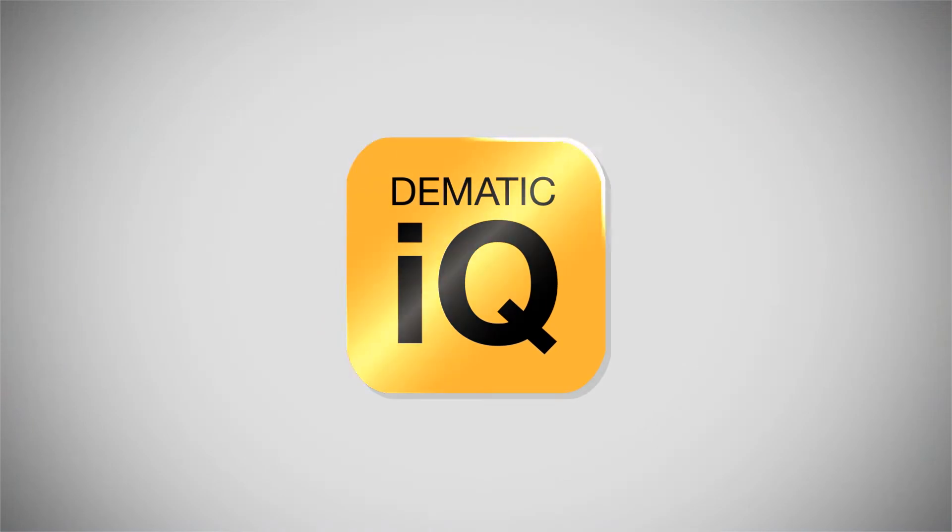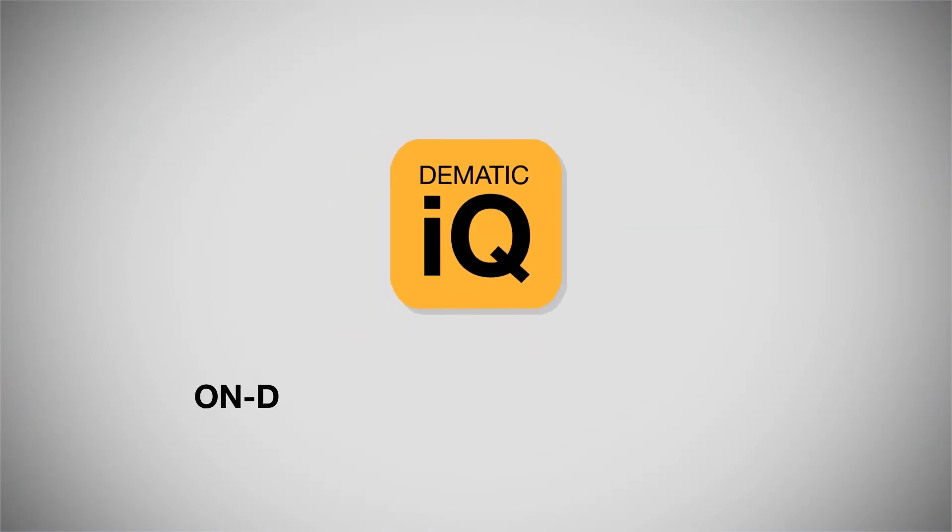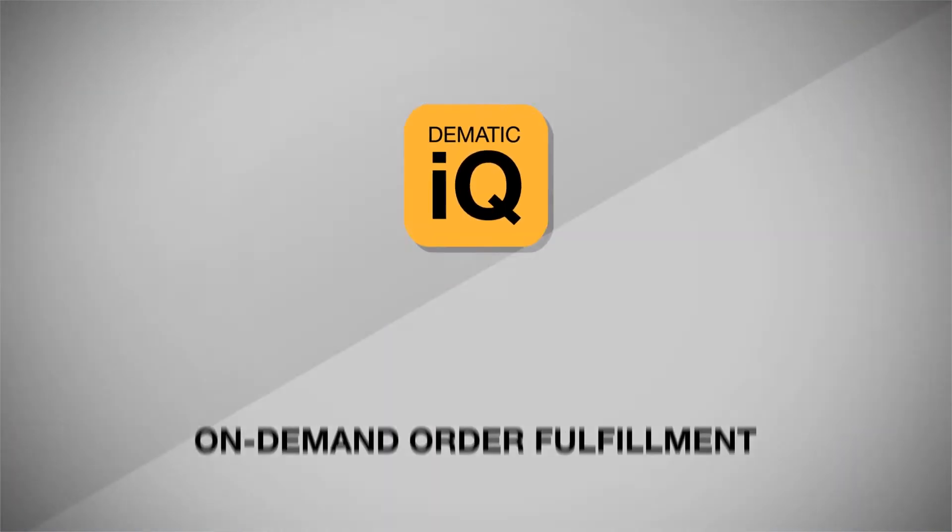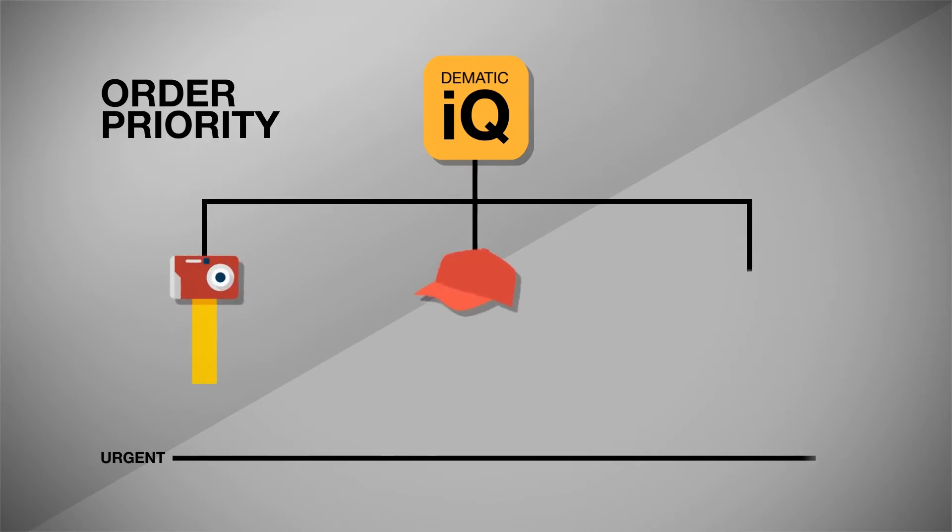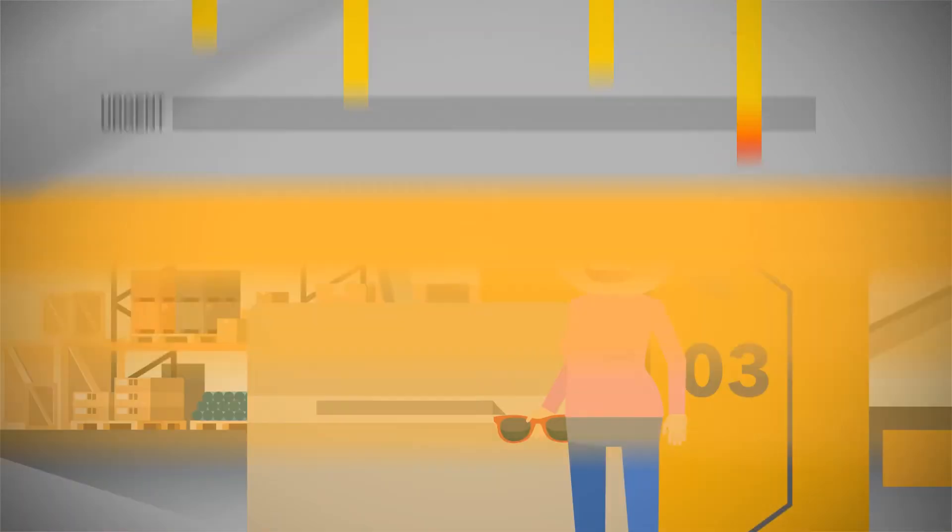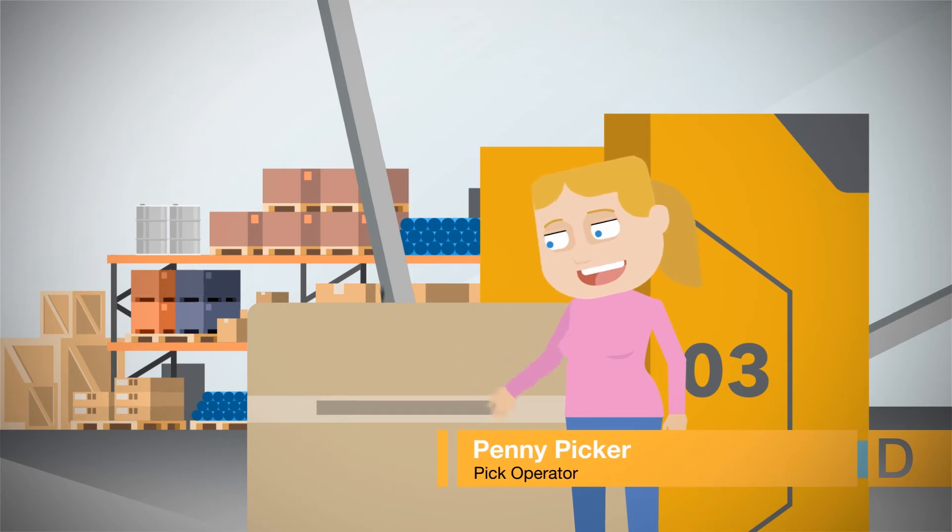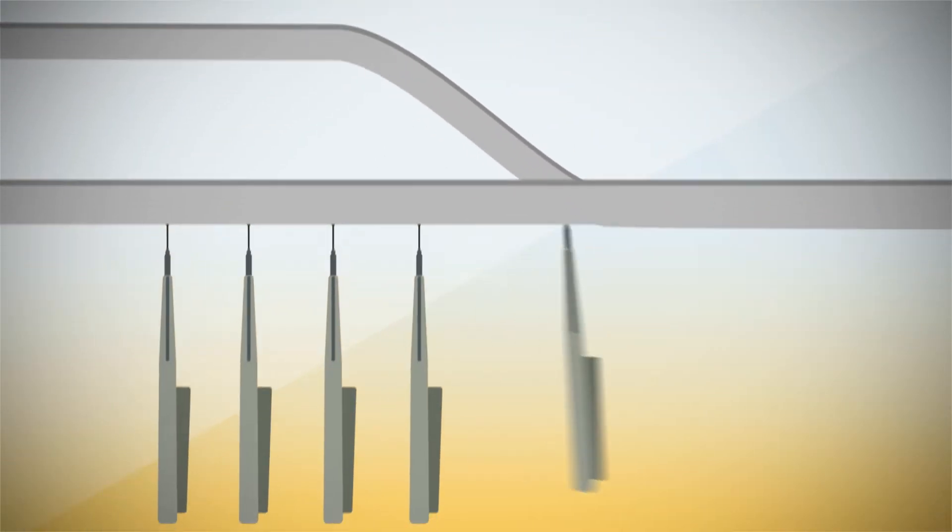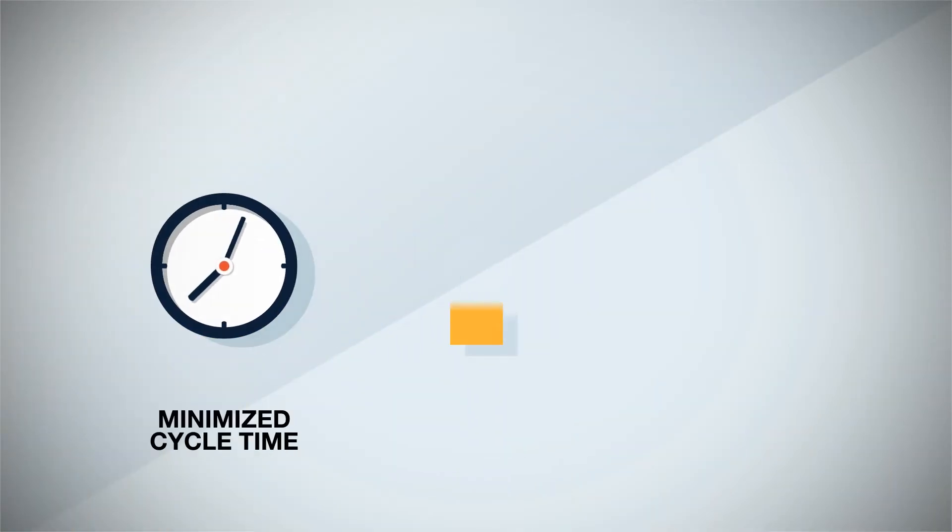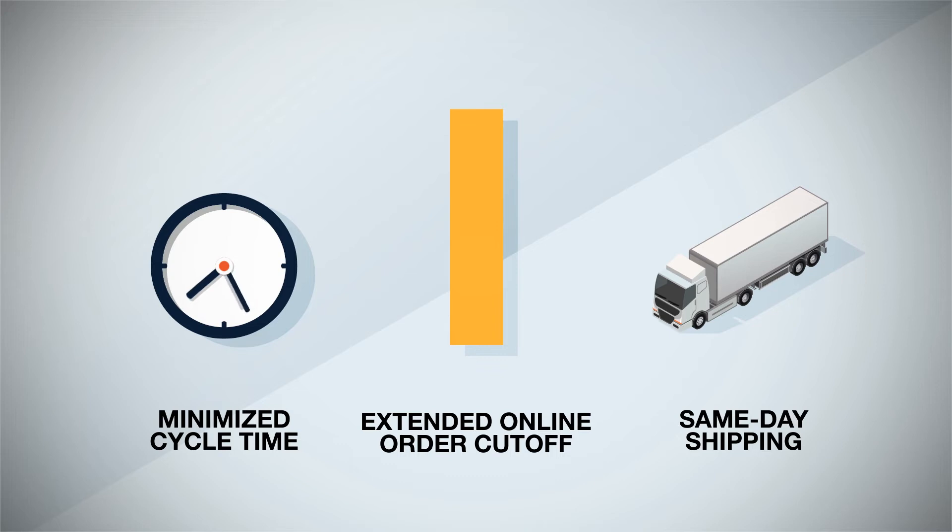Thanks to Domatic IQ Optimize, the software that powers on-demand order fulfillment, it's easy to fill urgent and priority orders without the manual expediting often needed with wave planning and multi-stage sortation systems. Constantly assessing and prioritizing the most urgent orders, this continuous flow process ensures that cycle times for all orders are minimized, allowing you to extend your online order cutoff while still supporting same-day shipping.